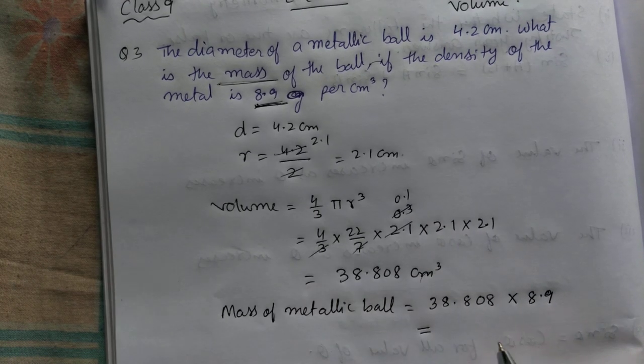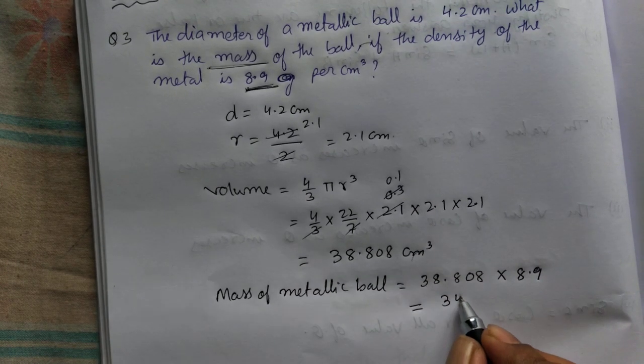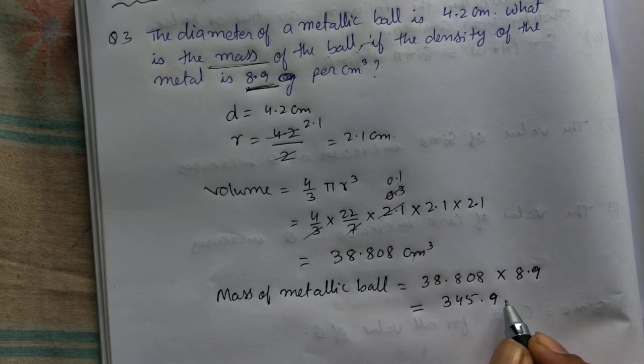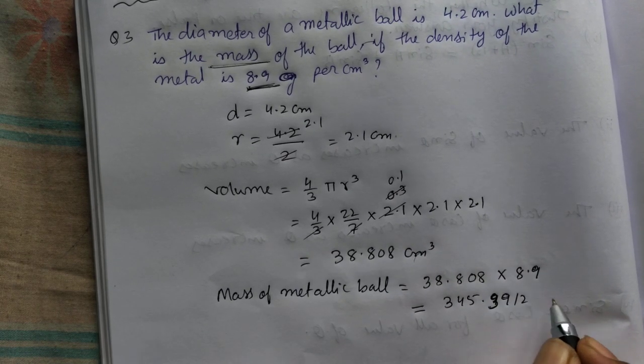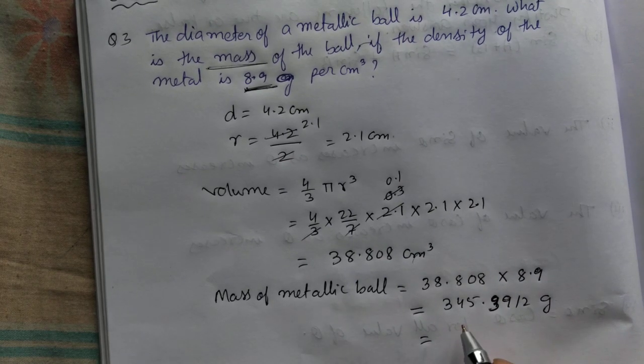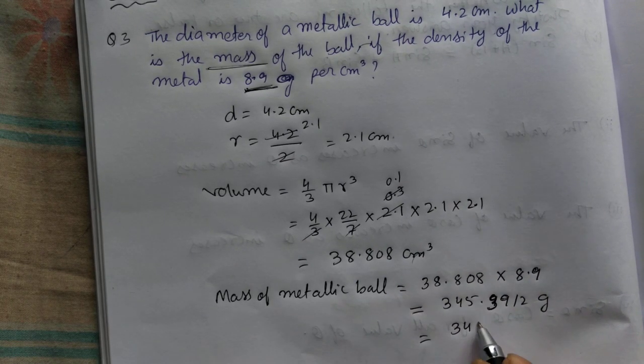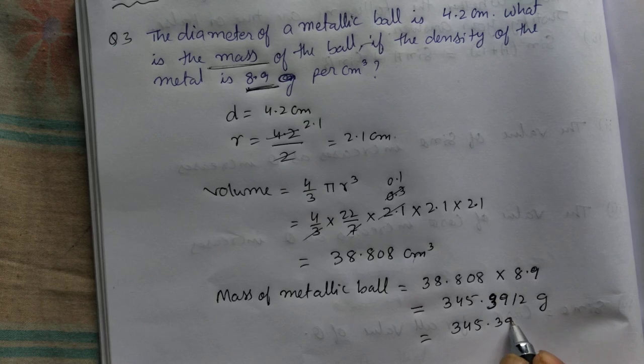If you multiply these two numbers, you'll get 345.3912 grams, or you can write the answer in 2 decimal places, 345.39 grams.